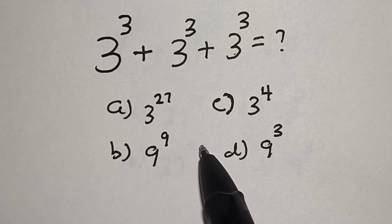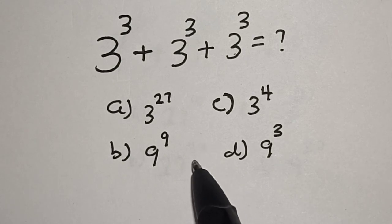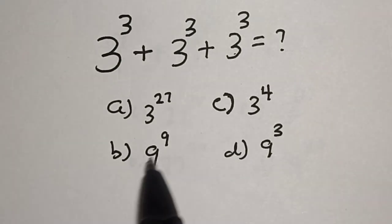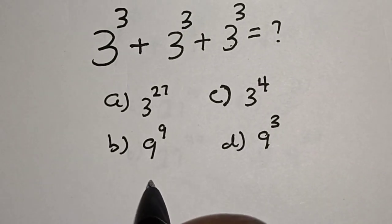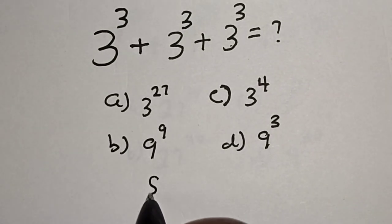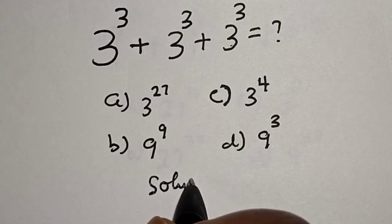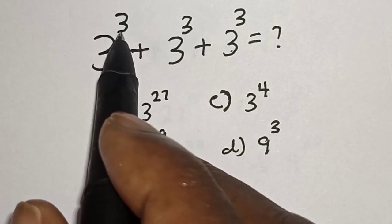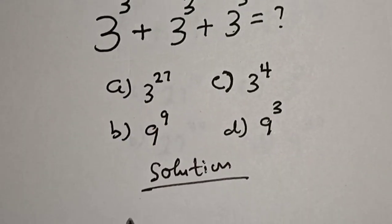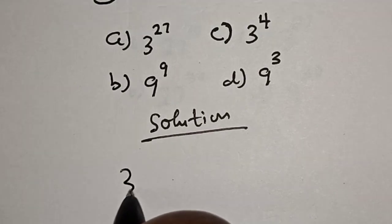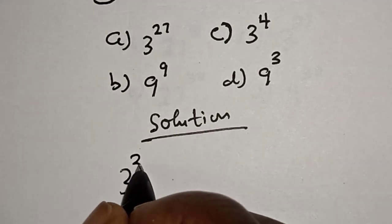Before we proceed, please don't forget to like, share, comment and subscribe. Solution: 3 to the power of 3 is common — let's factor it out: 3 raised to power 3 times a bracket.